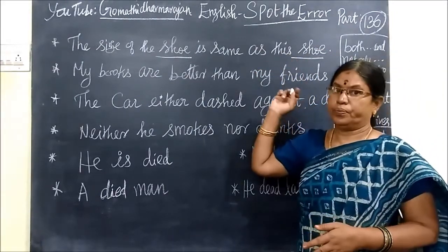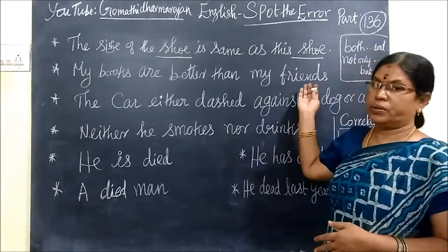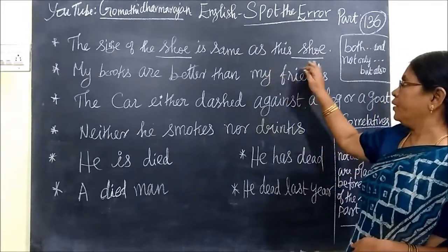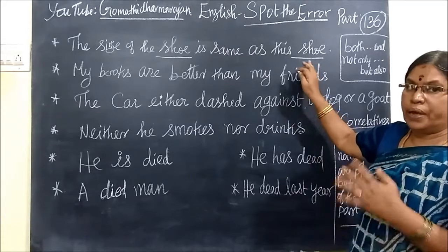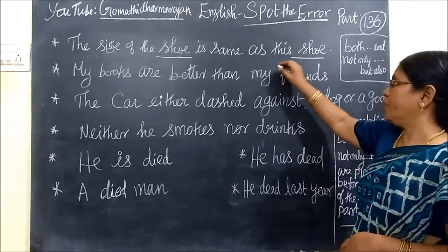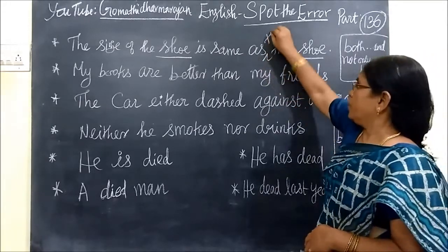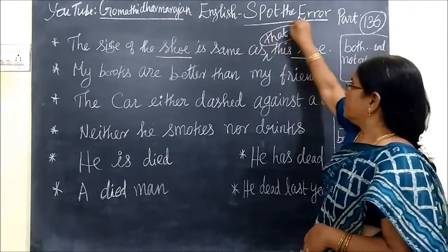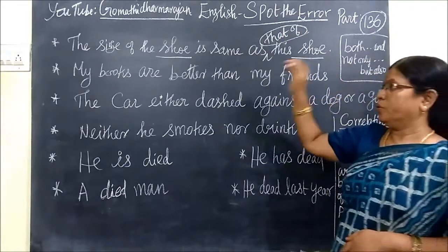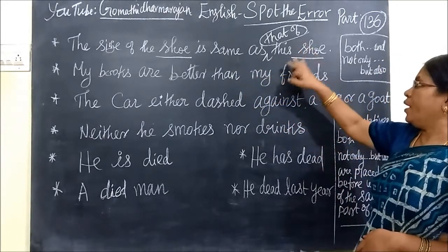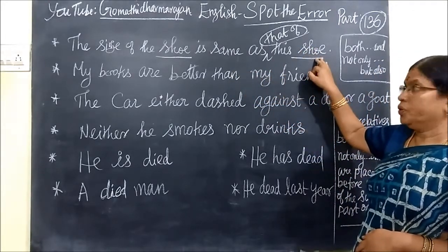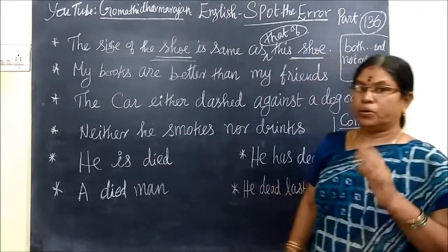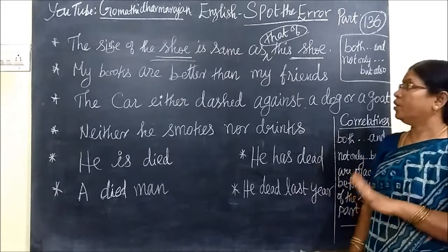The shoe is same as this. So we are comparing two things of the same category. And for a part, we are using 'that of' the other. The size of the shoe is same as that of this shoe. So in that way, we are using 'as that of'.